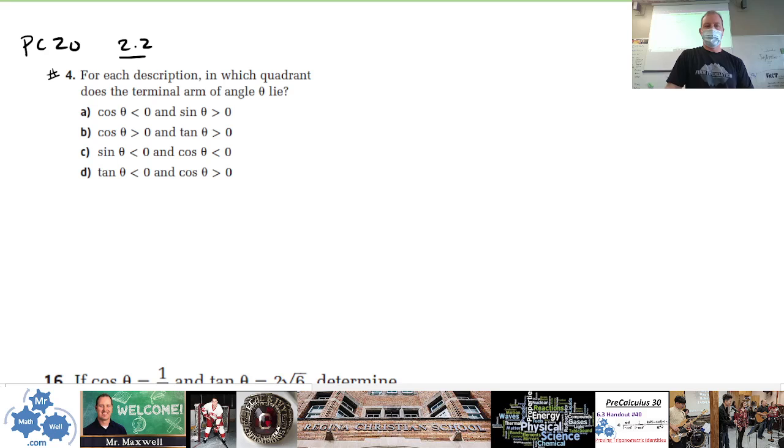Alright, 2.2, PC 2, 2.2 number four. We're talking about this question here where it says for each description, in which quadrant does the terminal angle of angle theta lie? So we're asking, does it lie in quadrant one, or does it lie in quadrant two or three or four? And the clues that we're given are the trig function signs.